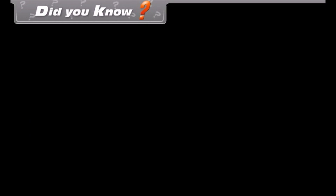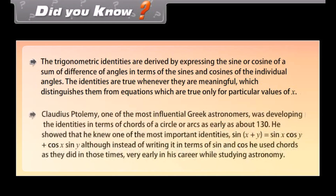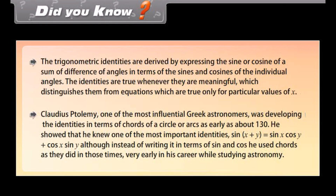Did you know? Claudius Ptolemy, one of the most influential Greek astronomers, was developing trigonometric identities in terms of chords of a circle as early as about 130 AD. He showed that he knew one of the most important identities: sin(x + y) = sin x · cos y + cos x · sin y, although he expressed it using chords rather than sines and cosines, early in his career while studying astronomy.